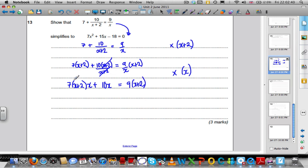Now time to expand out. 7 times X is 7X, 7 times 2 is 14, so this is 7X plus 14. All of that's going to be multiplied by X, plus 10X is equal to 9 times X is 9X, 9 times 2 is 18. Keep going.